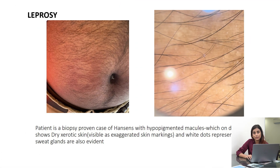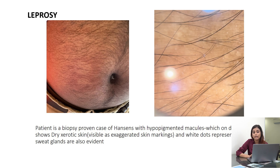Now we will discuss leprosy, which also presents with hypopigmented lesions. In leprosy, there is damage to the sweat gland ducts; when sweat gland ducts are damaged, there is an area of relative anhydrosis. What you will see is that the skin markings are exaggerated because the skin is dry, and the sweat gland ducts are visible because they get dilated and are not working well, so you will be able to appreciate them better.